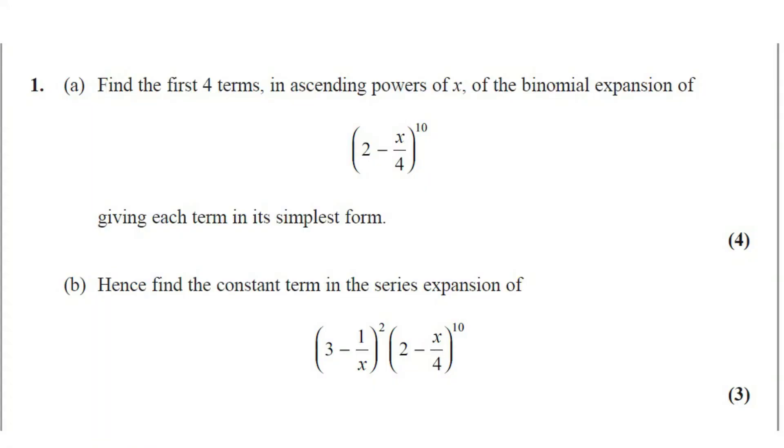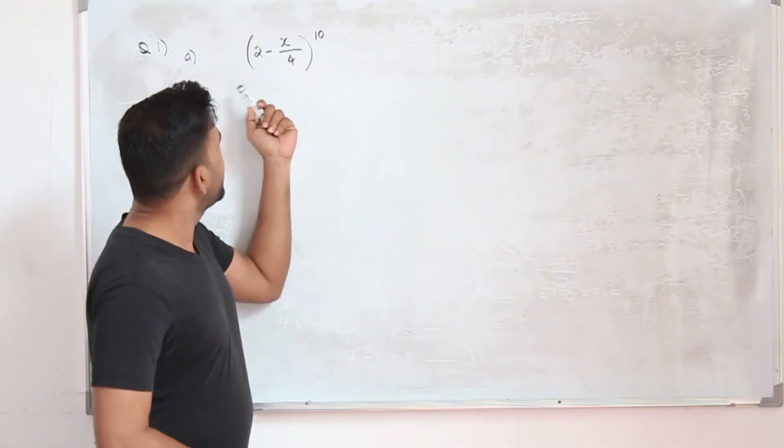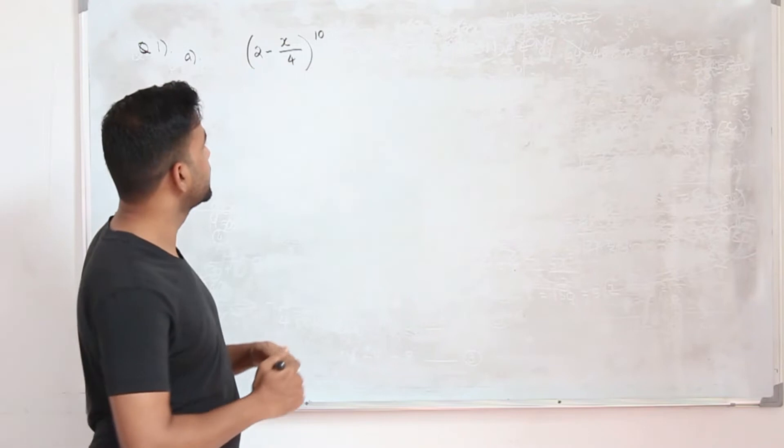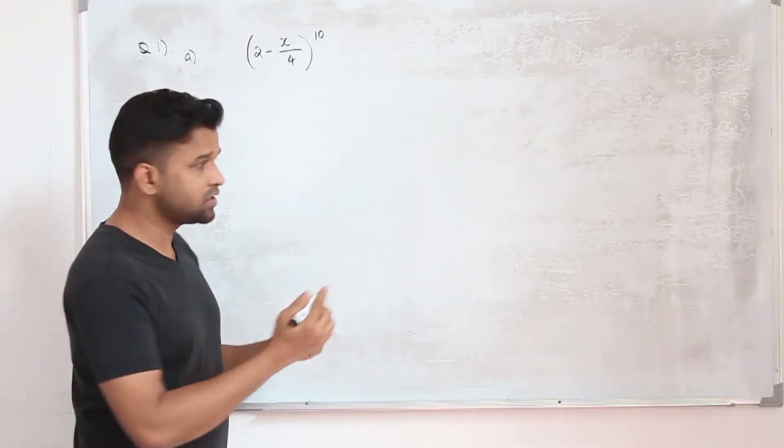Question number 1, part a. Find the first 4 terms in ascending powers of x for the binomial expansion of (2 - x/4)^10, giving each term in its simplest form. The question carries 4 marks. Here they want you to write the first 4 terms of this binomial expansion. So you need to know the binomial expansion first.